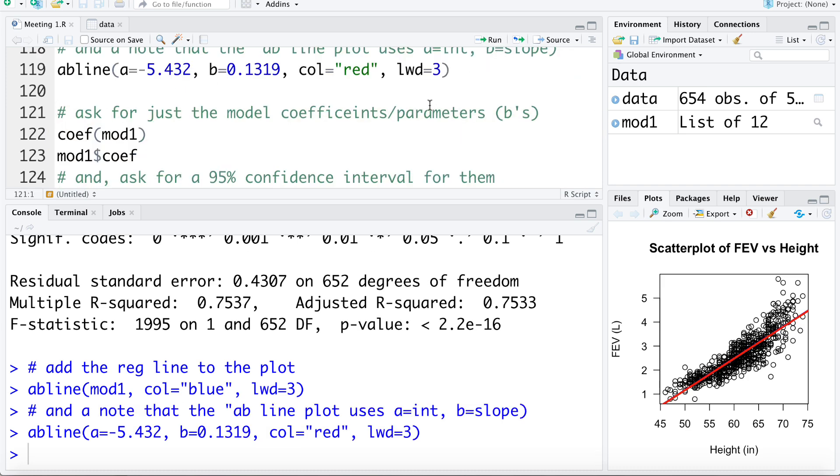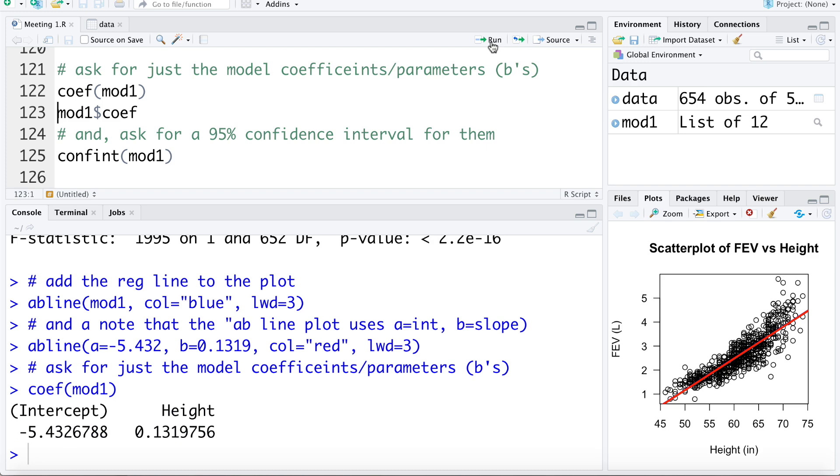A few quick commands to remind ourselves of. If we want to get just the model's coefficients, we can ask for them using the coef command. This is asking for the coefficients of model 1, or we can also say model 1 dollar sign coef, going into model 1 and extracting the coefficients.